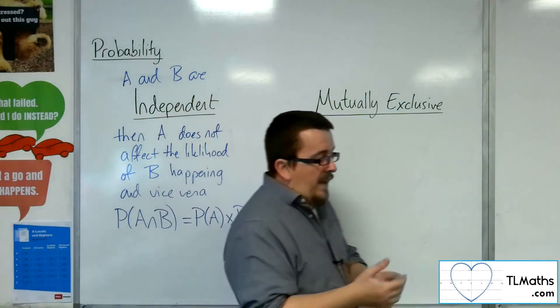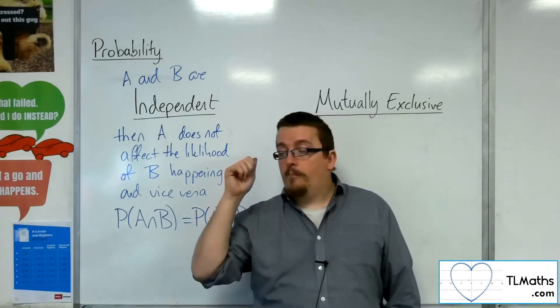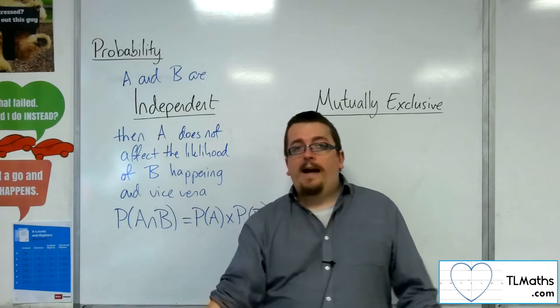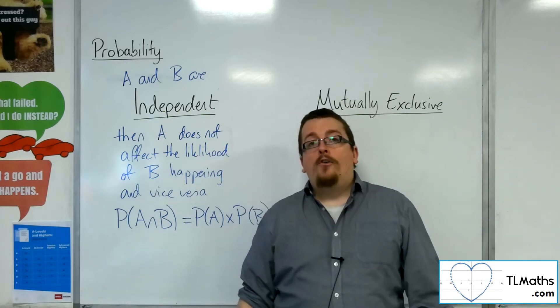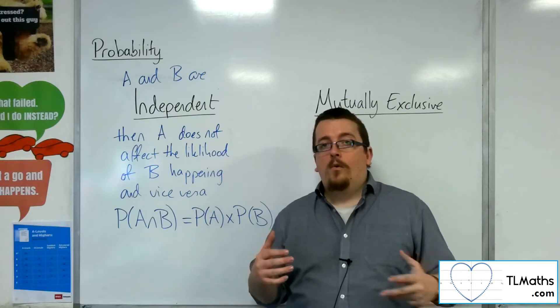So in other words, if we go back to that game of rolling the six, the probability of that is one-sixth of getting a six. And the probability of picking an ace from a pack of 52 playing cards is four out of 52, or one out of 13.